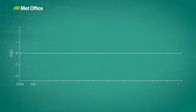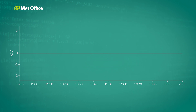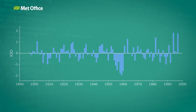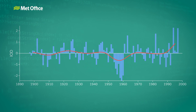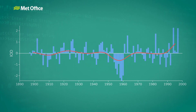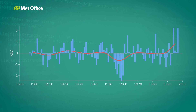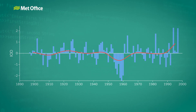The Indian Ocean Dipole is a relatively recent discovery. Scientists have only known about it since 1999, but climatologists have been able to map the pattern back in time due to sea surface temperature observations throughout the decades.